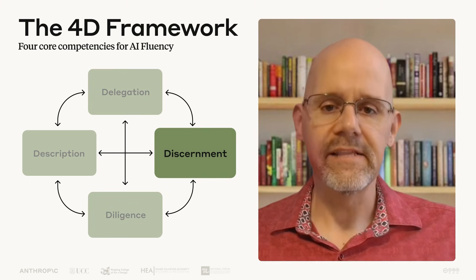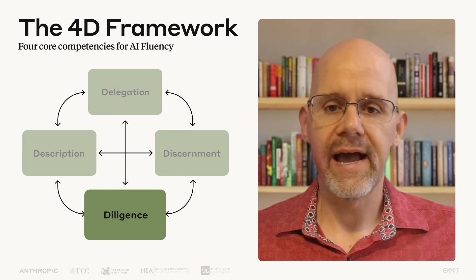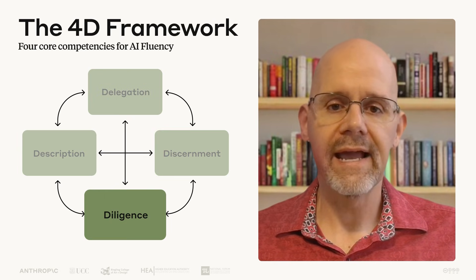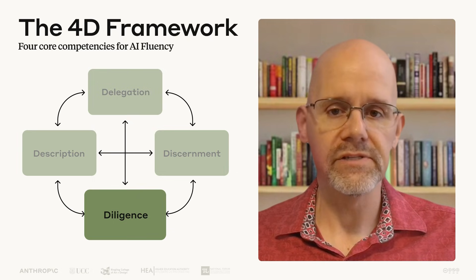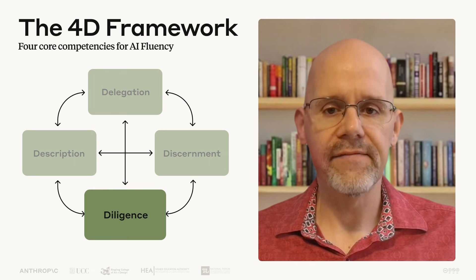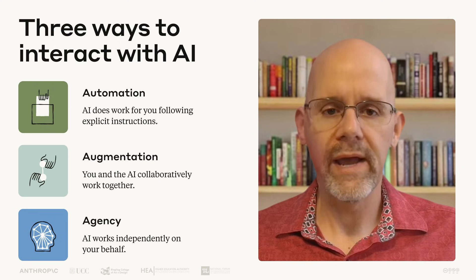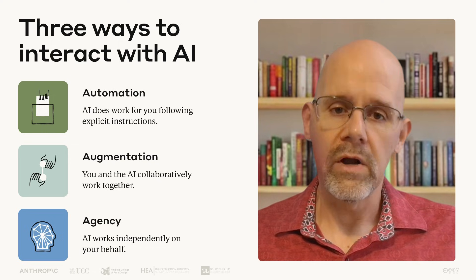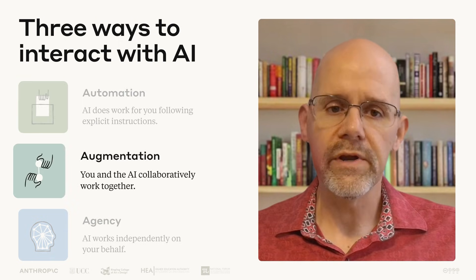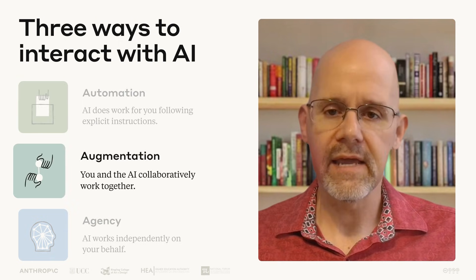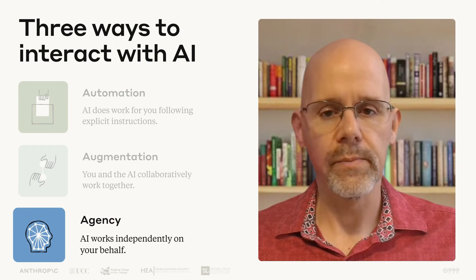And finally, diligence ensures our AI interactions are responsible. Through thoughtful selection of AI systems, transparency about AI's role, and taking accountability for the final product — also known as creation, transparency, and deployment diligence — we can work with AI ethically and safely. Remember that these competencies apply across all three ways we interact with AI: automation, where AI performs specific tasks following your instructions; augmentation, where you and AI collaborate as thinking partners; and agency, where AI is configured to act independently on your behalf.